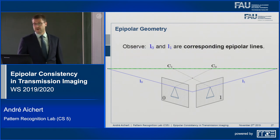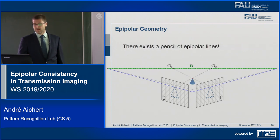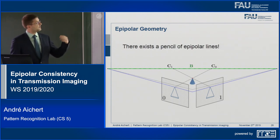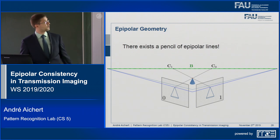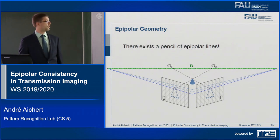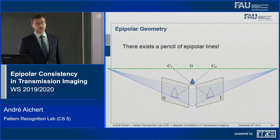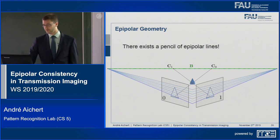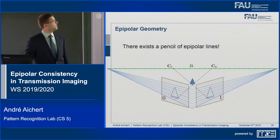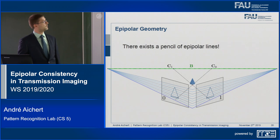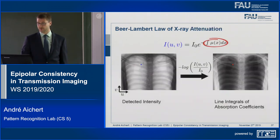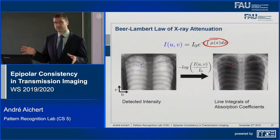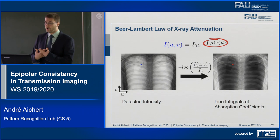L0 and L1 are corresponding epipolar lines. You can choose any arbitrary point to define that epipolar plane using the two source positions C0 and C1. Using any other point in the cone, you would find many corresponding epipolar lines, and all these epipolar lines contain the baseline — the line passing through source positions C0 and C1, shown in green. This is essentially the setup I'll be discussing throughout the talk.